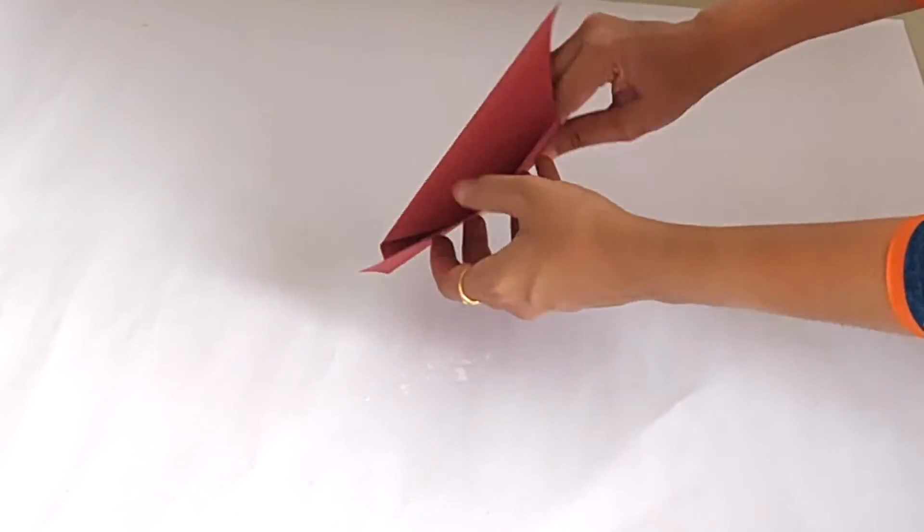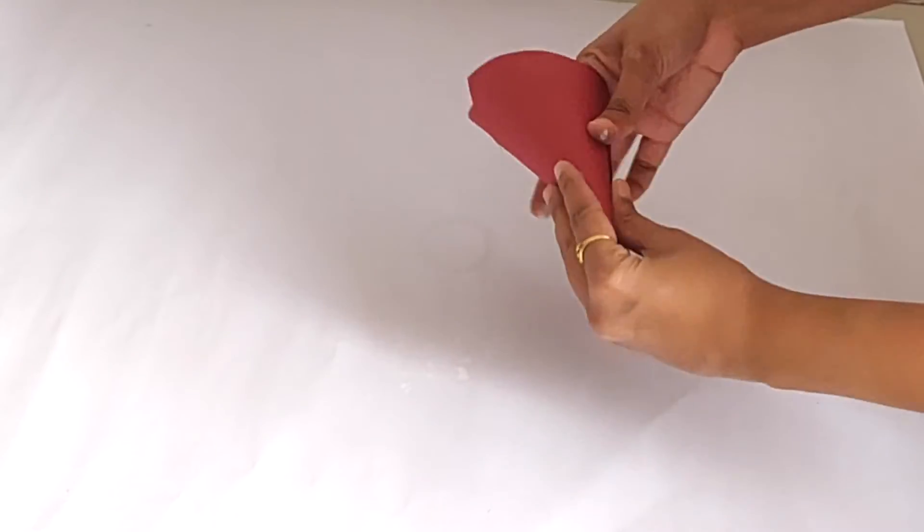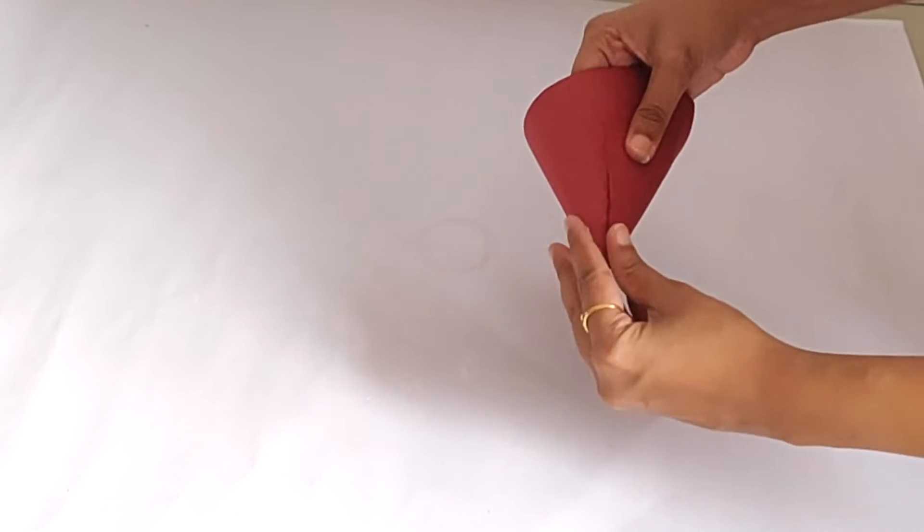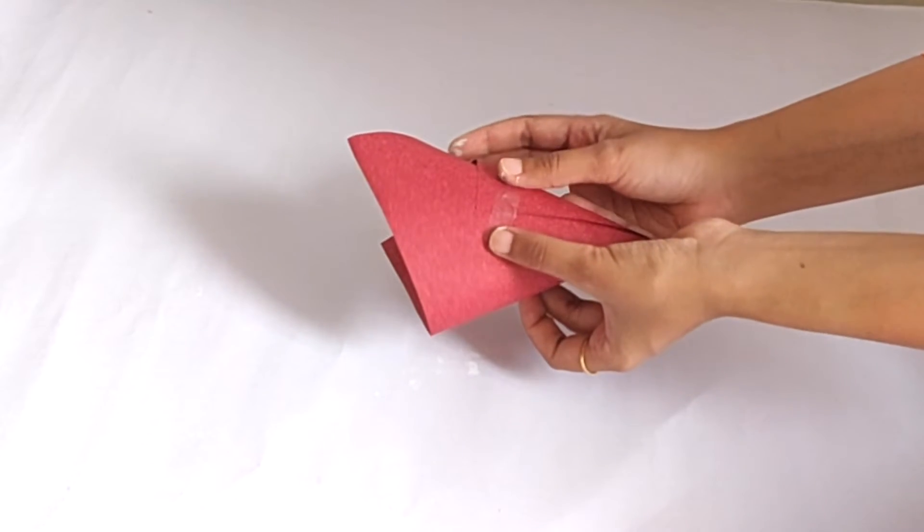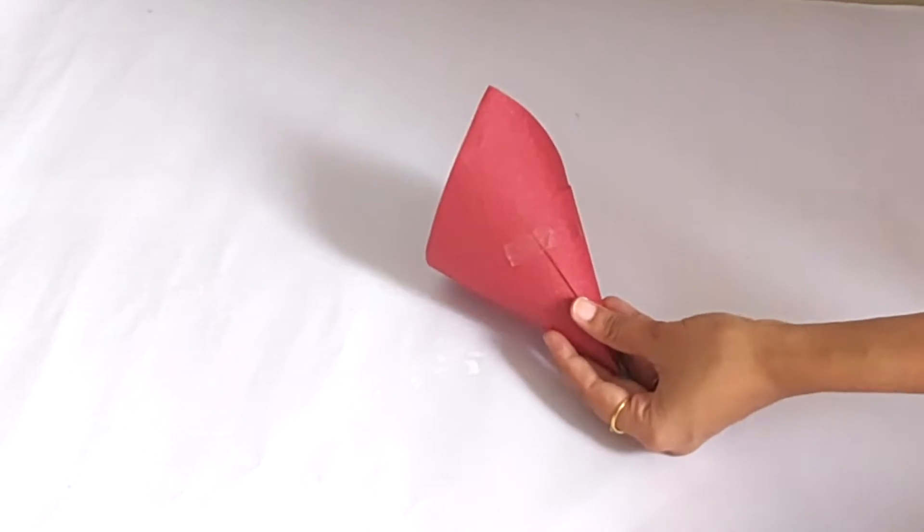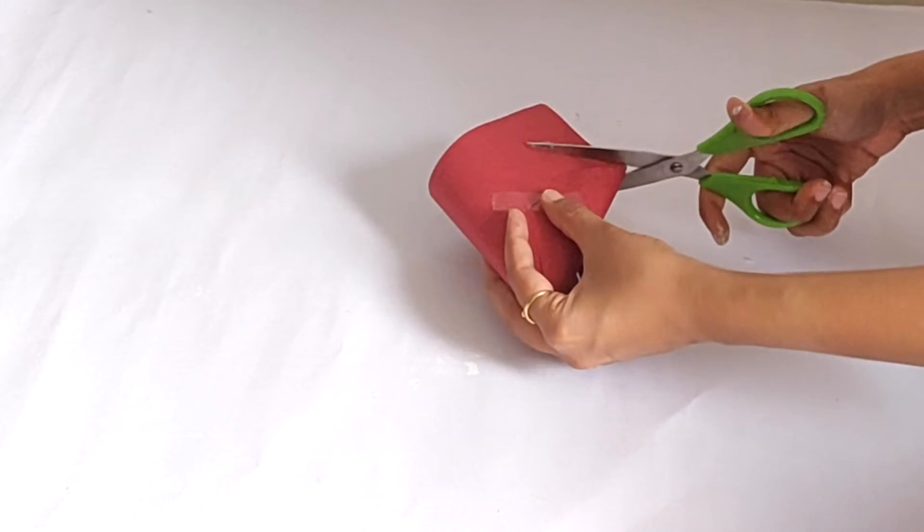For snowman's cap, I used a red sheet paper and made a cone out of it. Secured it with tape and then evened out the bottom part.